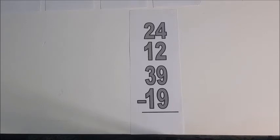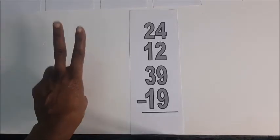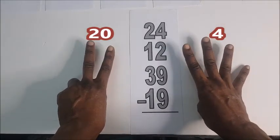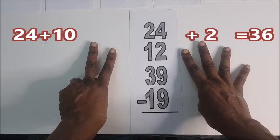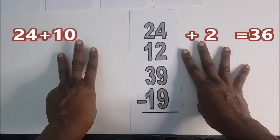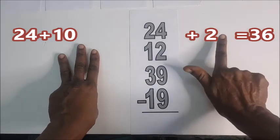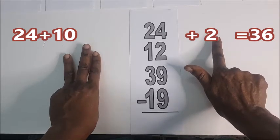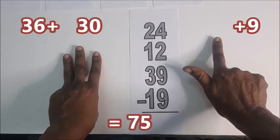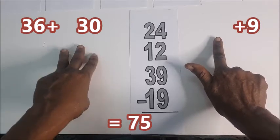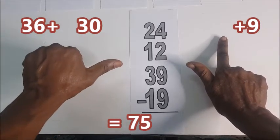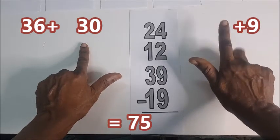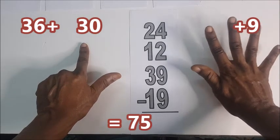Now 24, where you have 20 and you have 4, that is 24. Plus 12, 10 here, 1, 2, that is 12. That is 36. Plus 39, 10, 20, 30, plus 9, 1, 2, 3, watch out.